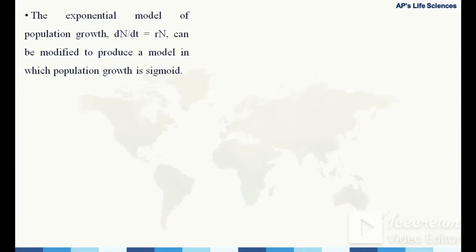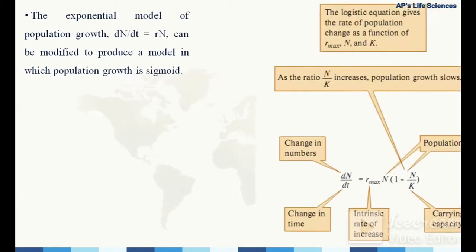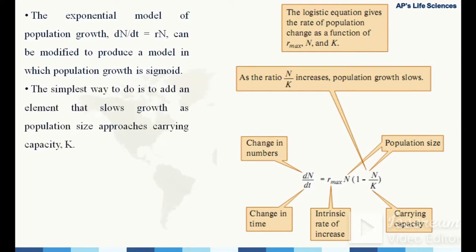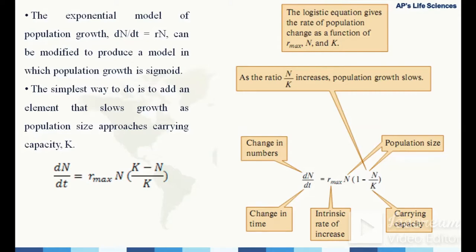The exponential model dn/dt = r·N can be modified to produce a sigmoid population growth model. The simplest way is to add an element that slows growth as population size approaches the carrying capacity — by inserting the parameter (K − N)/K, where K represents the carrying capacity and N represents the population size.